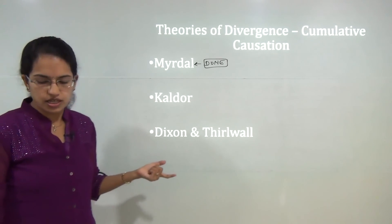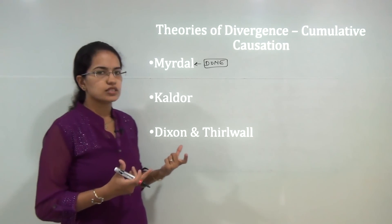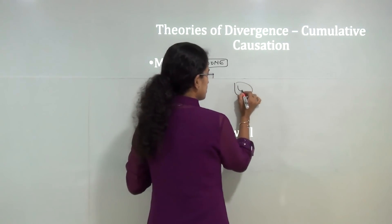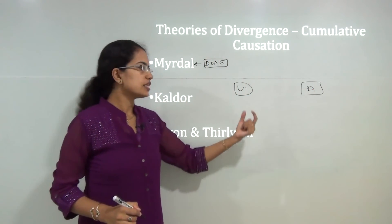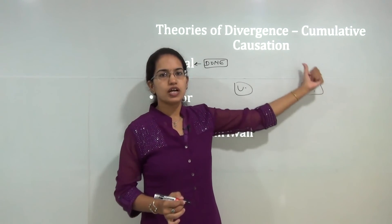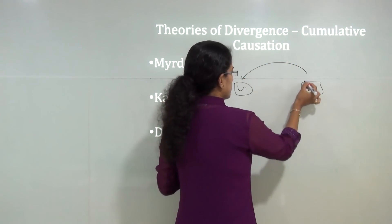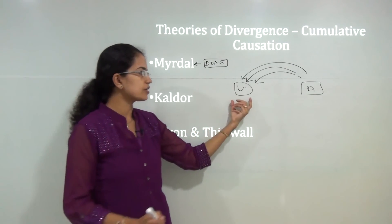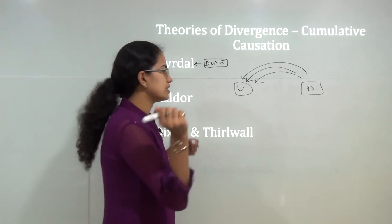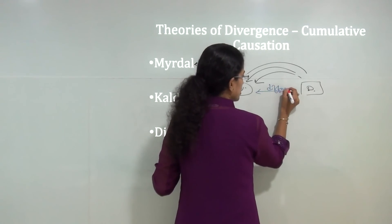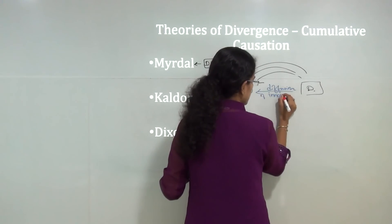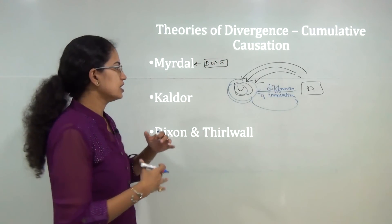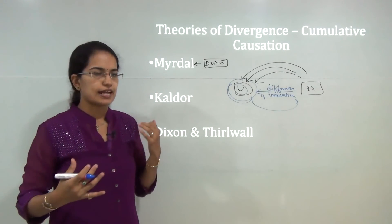Just to do a brief recap: Myrdal talked about the concept of cumulative causation. He tried to explain the relationship between an underdeveloped region and a developed region. The developed region constantly benefits the underdeveloped region, and as that benefit percolates, the underdeveloped region tries to grow. When it grows, there is diffusion of innovation — more innovative ideas flow from developed to underdeveloped regions — leading to a kind of cumulative causation in the society.